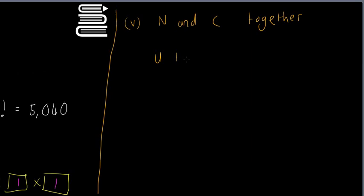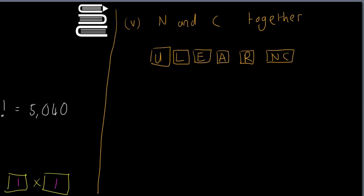We have U, L, E, A, R, and then N and C treated as one unit — that gives us six separate boxes. If we just rearrange U, L, E, A, R, and NC as one item, the answer would be six factorial. But we also have to consider that you can have either N-C or C-N, so we multiply by two factorial, which is just two. The answer is six factorial times two factorial.